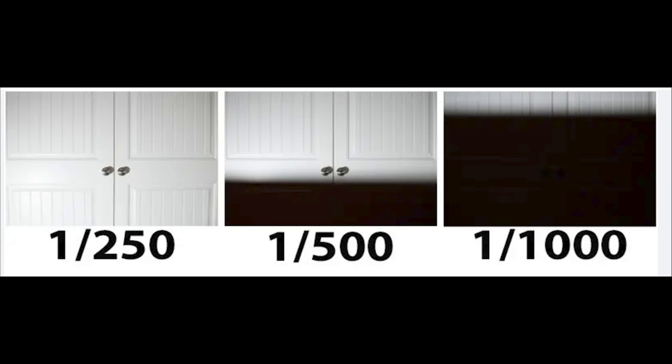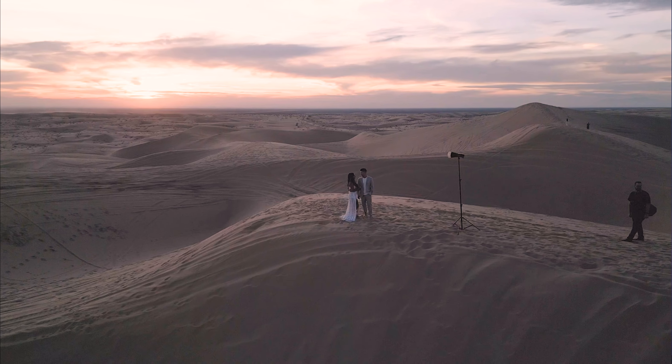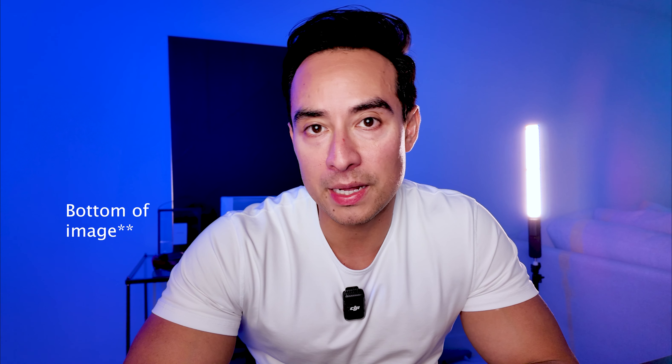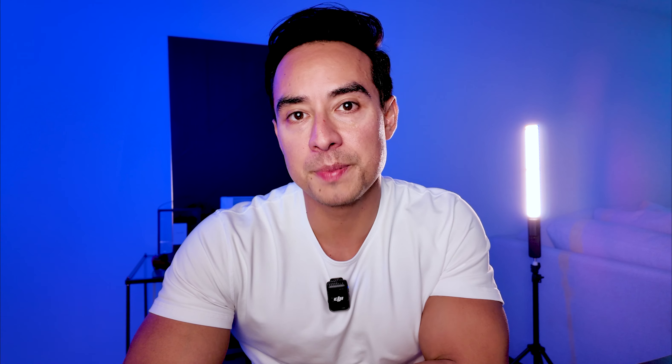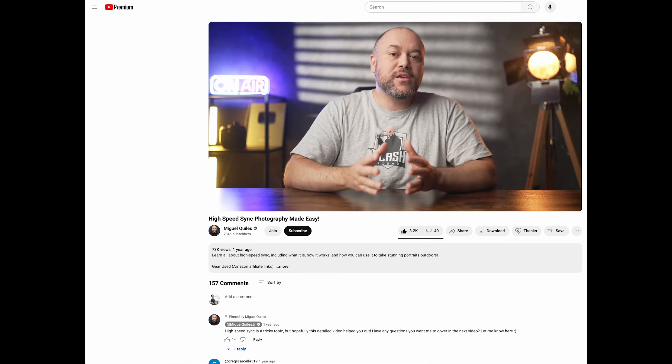High-speed sync is when you go out of your native sync speed. Your native sync speed on most cameras is 1/250th of a second. When you go past 1/250th, you get a line on the bottom that looks like a black bar. If you're seeing this black bar, it means your trigger let you go past your native sync speed, but your flash and your camera are not syncing up. That can become problematic because the flash can't keep up with the curtain — it doesn't sync.